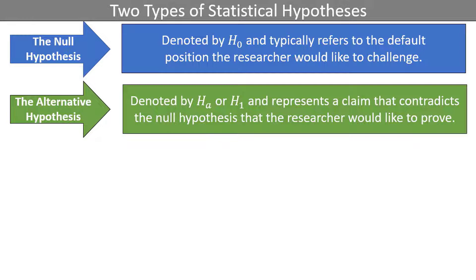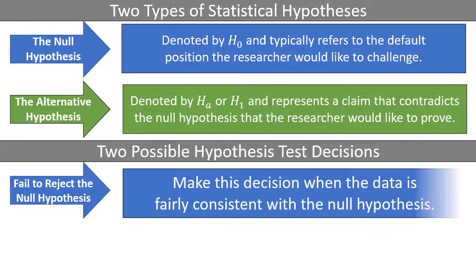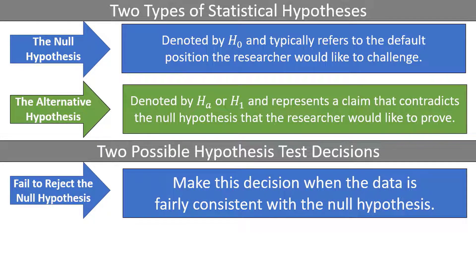After data has been gathered, there are two possible decisions. We fail to reject the null hypothesis if the data is fairly consistent with the null hypothesis. This doesn't mean that the null hypothesis is necessarily true, it just means that our data does not suggest that it's false. We generally try not to say that we accept the null hypothesis. Accepting the null hypothesis makes it sound like we know for sure that it's true. It's much more accurate to say that we fail to reject the null hypothesis.